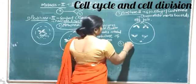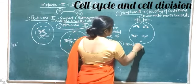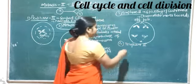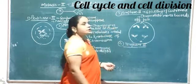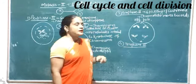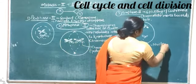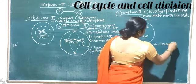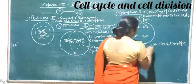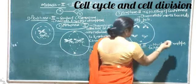The fourth stage is Telophase II. As Telophase II begins, the nuclear envelope starts to reappear around the separated chromatids at each pole.